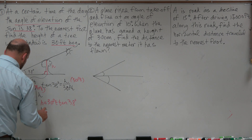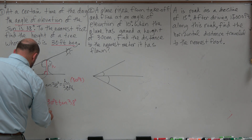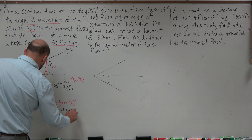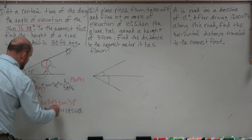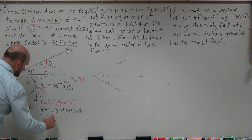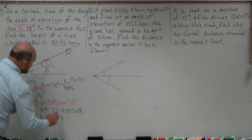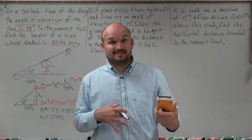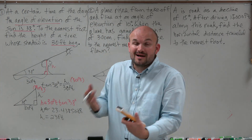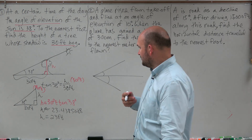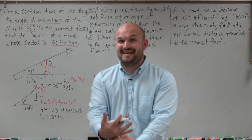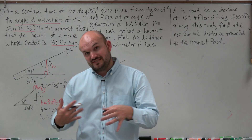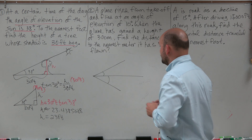h is approximately 23.4385688, so rounding to the nearest foot gives 23 feet. It's really important in word problems to make sure you round correctly. If it says nearest foot, round to the nearest foot — we're communicating a real-world length, so we don't want to give a decimal answer.